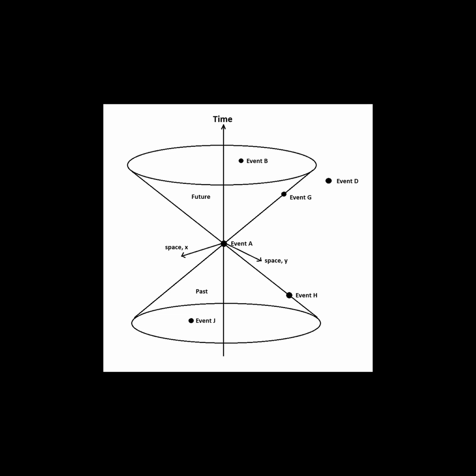The light cone also has a past component in the lower half of the diagram. Here, event J can influence event A, since it is inside the past light cone. Also, event H can reach A with no time to spare.